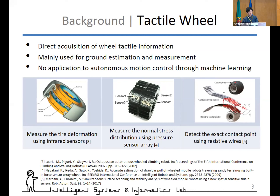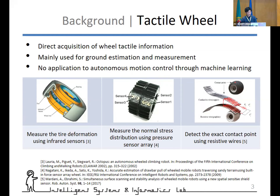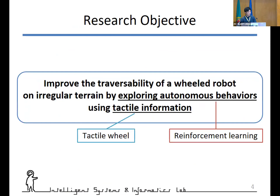The wheels of a wheeled robot are the only components that directly interact with the environment. The idea of tactile wheels is to take advantage of such a feature and acquire wheel tactile information. There are various types of tactile wheels, such as those equipped with infrared sensors, pressure sensor arrays, and resistive wires. These are mainly used for ground estimation and measurement, and there is no application to autonomous motion control through machine learning. Therefore, we define the research objective as improving the traversability of a wheeled robot on irregular terrain by exploring autonomous behaviors using tactile information.